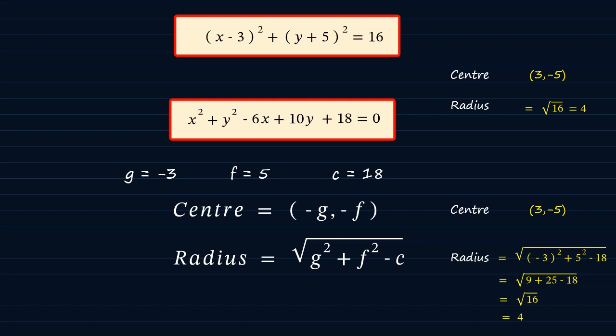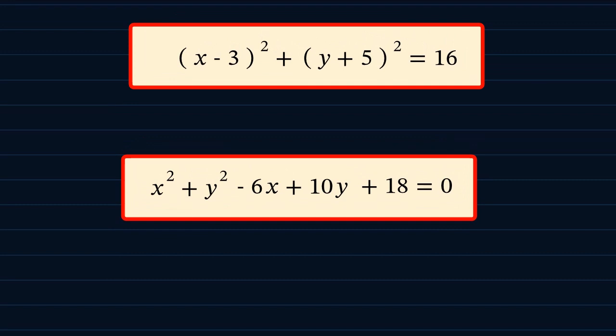And I'm sure you see that we get the same values for the radius using this other method. So I think you can see here that in order to convert your equation from the factored form to expanded form, then you simply have to expand the equation and rearrange it.